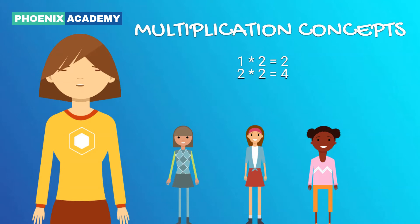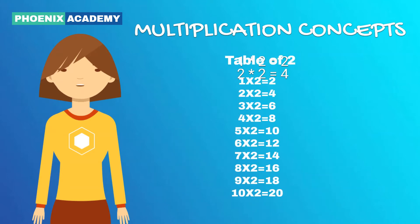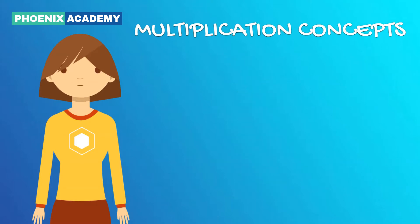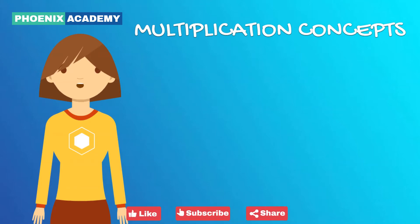Similarly, 3 times 2 equals 6. 4 times 2 equals 8. 5 times 2 equals 10. 6 times 2 equals 12. 7 times 2 equals 14. 8 times 2 equals 16. 9 times 2 equals 18. 10 times 2 equals 20. So, to develop the multiplication table for any number, you need to keep on adding that number. Let us see the table for other numbers.